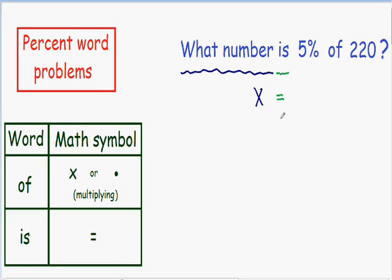So now if we take a look at the next words to the right, we have 5% of 220. And if you take a look at the chart I wrote for you on the bottom left part of the screen, the mathematical symbol for the word of is the multiplication symbol which is just an x or a dot. So instead of writing 5% of 220, I'm going to put 5% multiplied by 220.